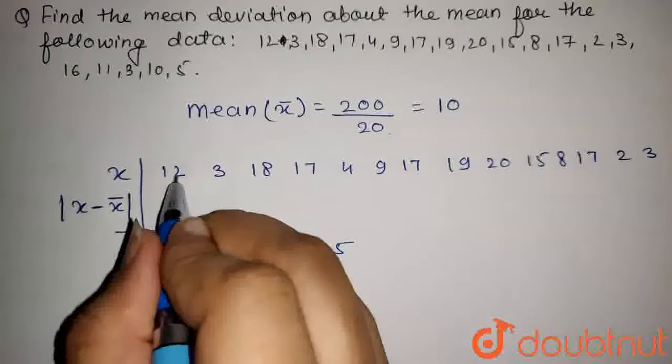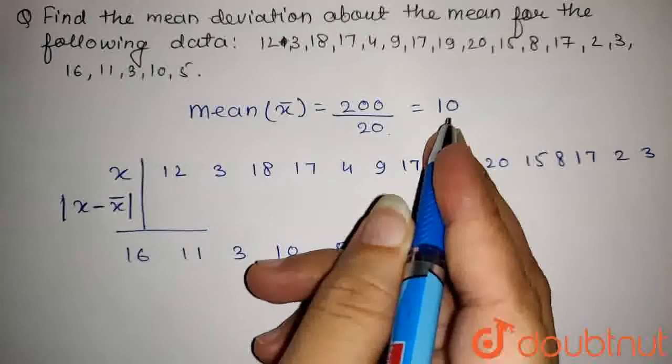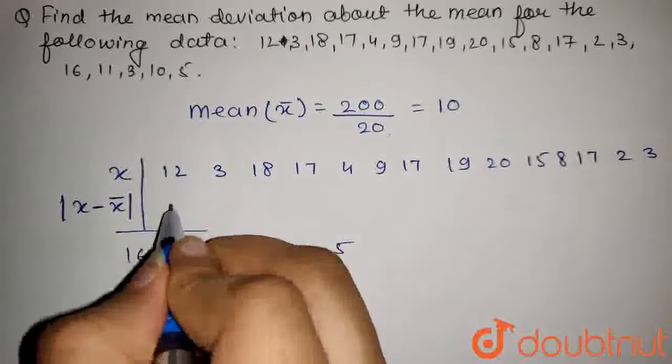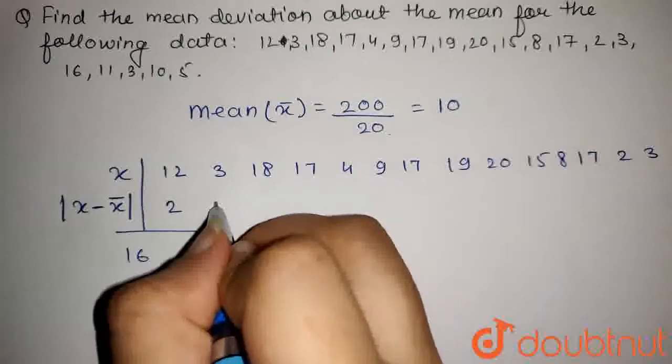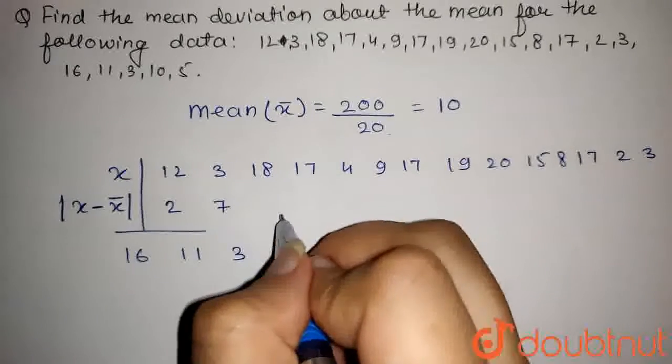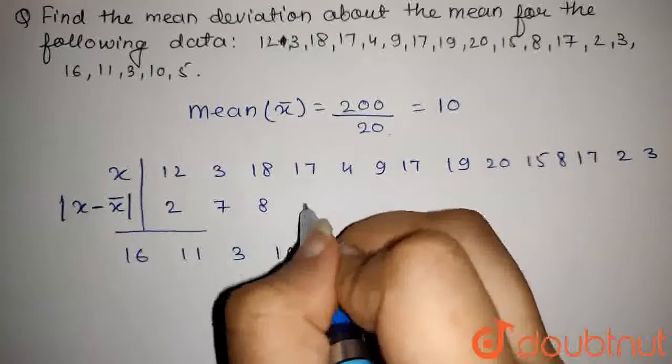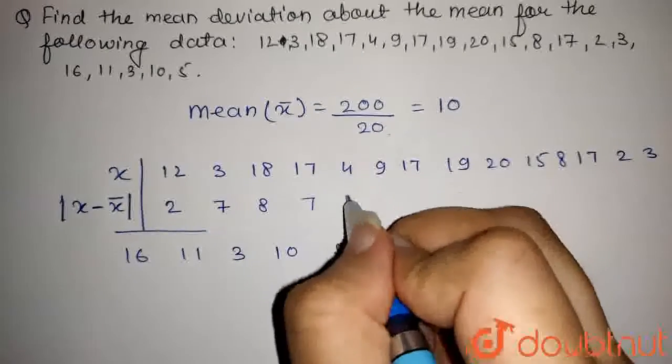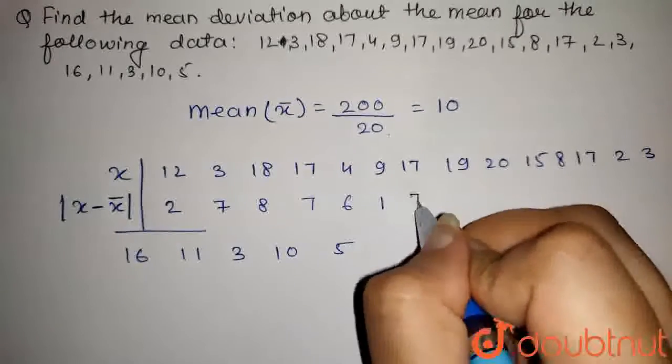That is, this will be 12 minus mean. So, mean is equal to 10. So, 12 minus 10, this will be 2. 3 minus 10 is 7, because we are taking modulus, so we will take only positive values. 18 minus 10 will be 8, 17 minus 10 is 7, 4 minus 10 is 6, 9 minus 10 is 1, 10 minus 17 is 7.